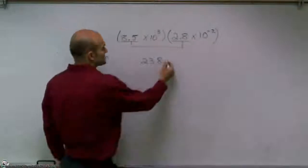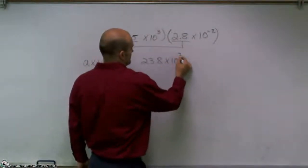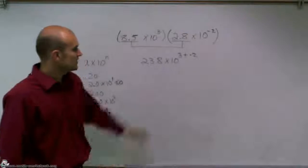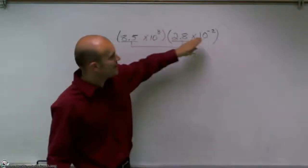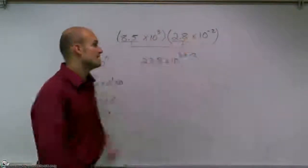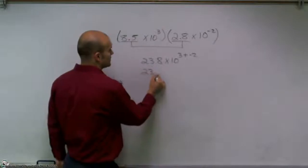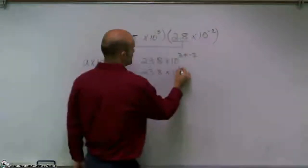Then I'm going to multiply my 10 to the third and 10 to the negative second. Remember, when you multiply numbers with the same base and exponents, you add the exponents. Therefore, I get 23.8 times 10 to the first power.